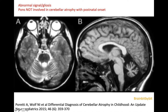This is an eight-year-old patient with capillary telangiectasia and atrophy of the cerebellum. Clues that are in favor of atrophy of the cerebellum are abnormal signal or gliosis in the cerebellum, because of the metabolic origin.